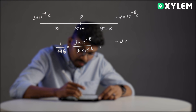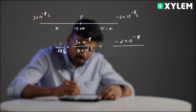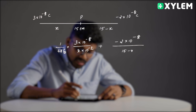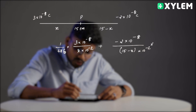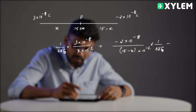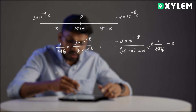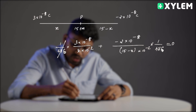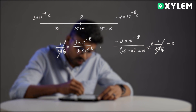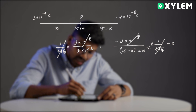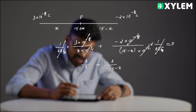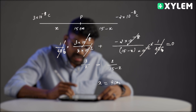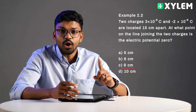Adding the contribution of the second charge: -2×10⁻⁸ Coulomb divided by its respective distance, also with unit conversion, and applying 1/4πε₀. After solving, the final answer is option C.